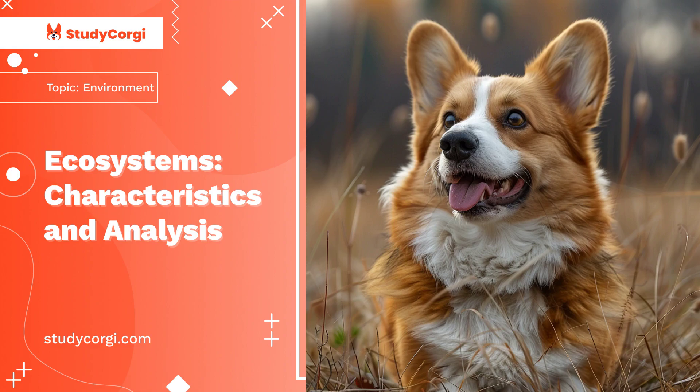Biotic components in ecosystems include organisms such as plants, animals, and microorganisms. Biotic features of an ecosystem include autotrophs, heterotrophs, and detritus.